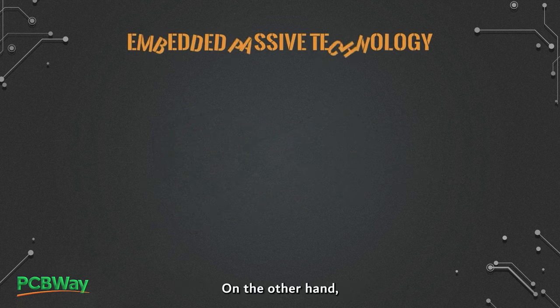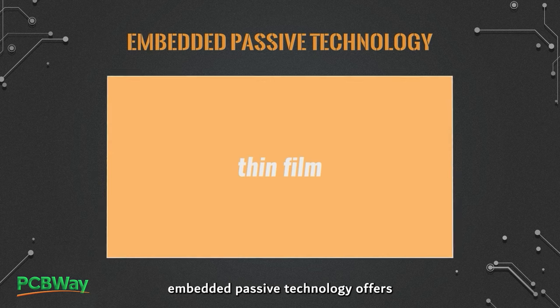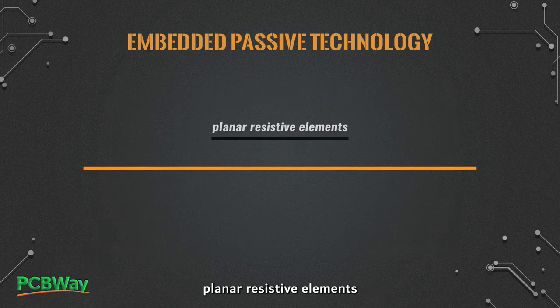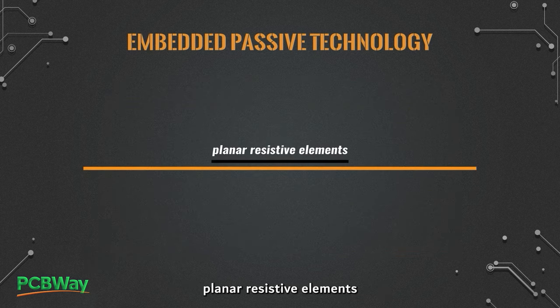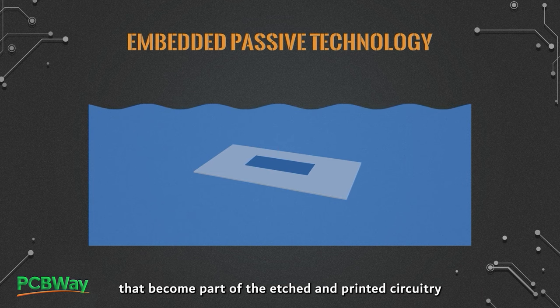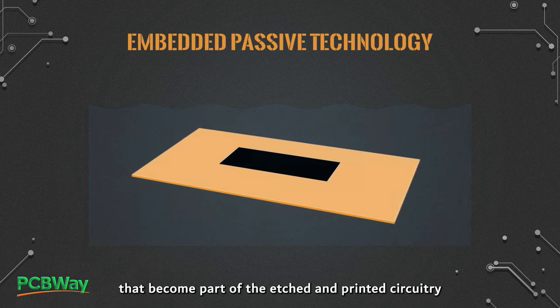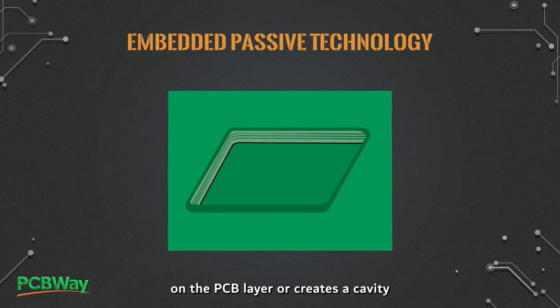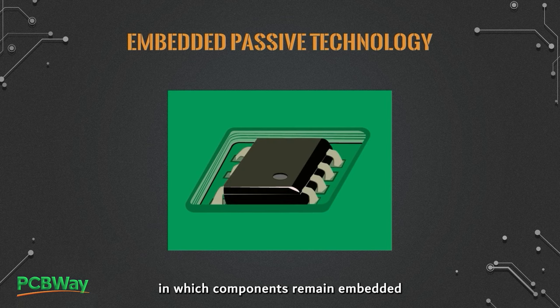On the other hand, Embedded Passive Technology offers planar resistive elements made into a thin film that become part of the etched and printed circuitry on the PCB layer, or creates a cavity in which components remain embedded within the printed circuit board.